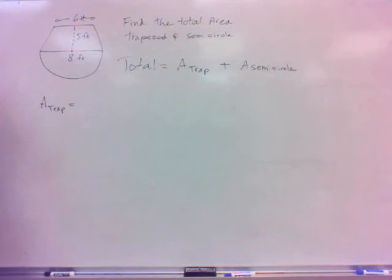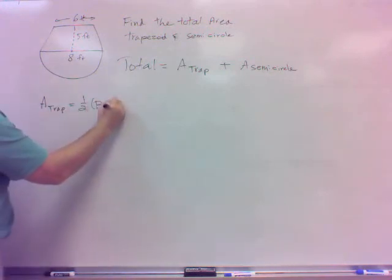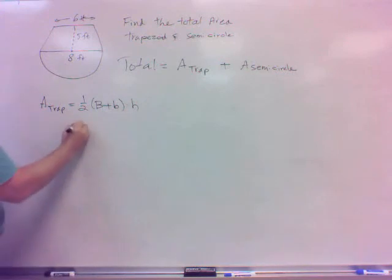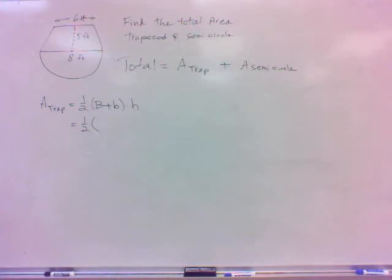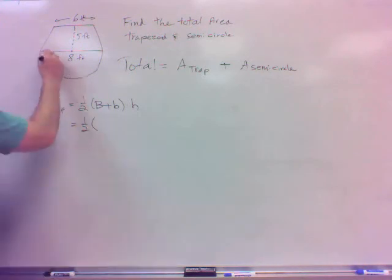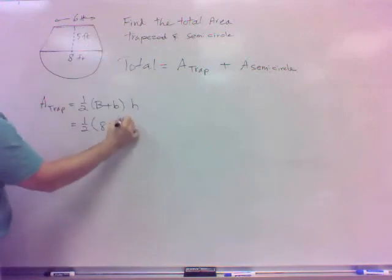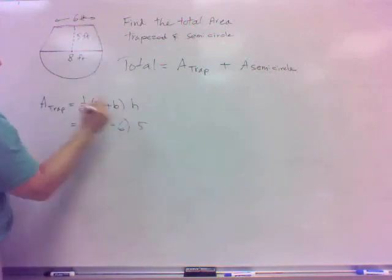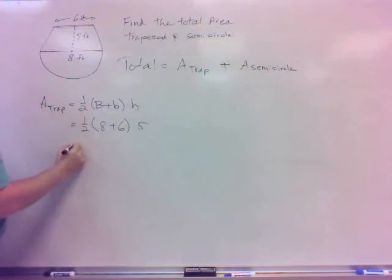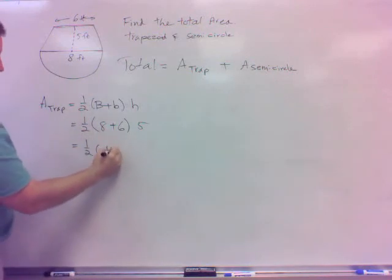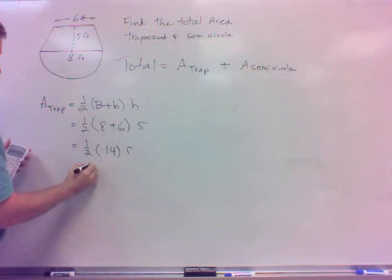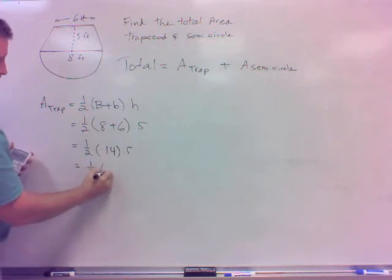Did one earlier. Trapezoid formula. What is it? One half big B plus little b times h. So that would be one half. The big B is the length across there, so that's 8. The little b is the length across there, so that's 6. And then the height is there, so that's 5. So it's half times 14 times 5. 14 times 5 is 70.